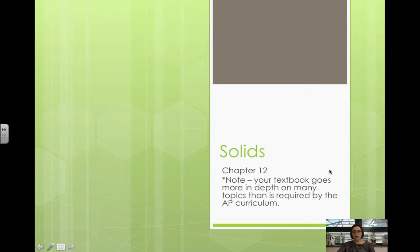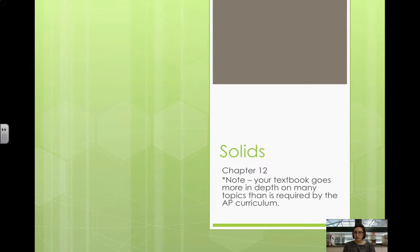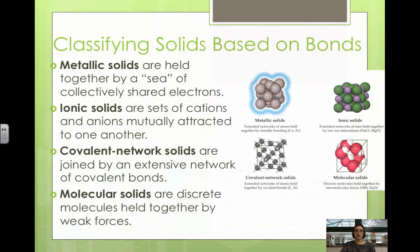With solids, they can be hard like diamond or soft like paraffin wax. Some solids readily conduct, others do not. Some can be easily manipulated and bent and folded, while others are brittle and will break. The physical properties are really dictated by the types of bonds that form between the atoms, and solids are classified according to these bonds.